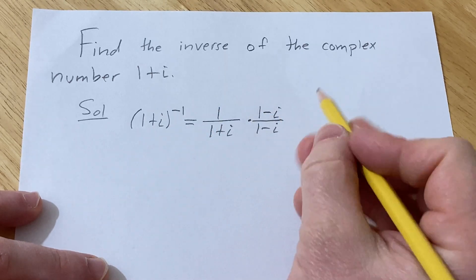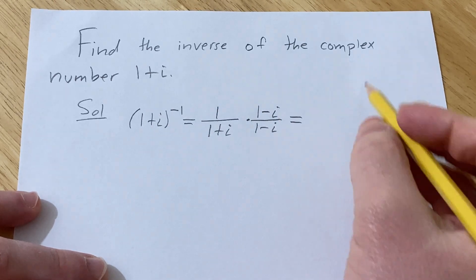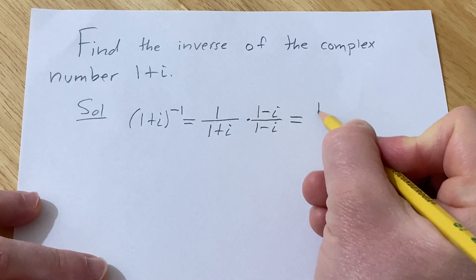Right? We're basically multiplying by 1. So this is equal to 1 times 1 minus i is 1 minus i.